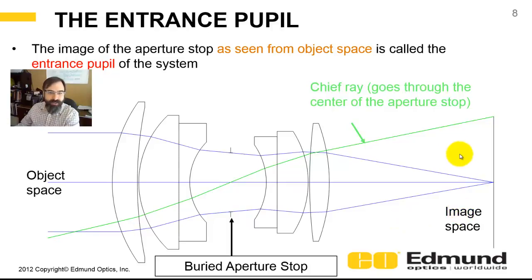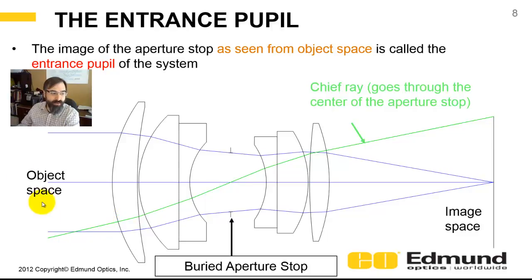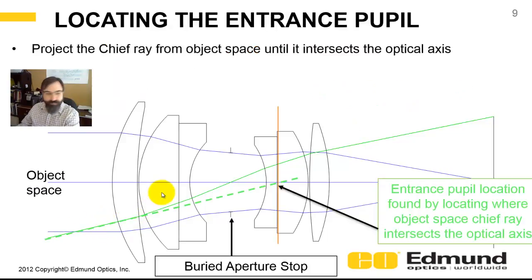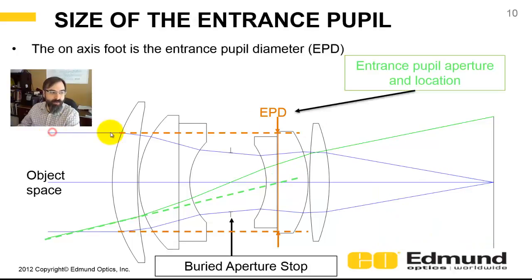Here is object space, here is image space, and I've drawn the chief ray. You can see where the chief ray is zero — by definition it goes through the optical axis where the stop is. To find the entrance pupil, wherever the chief ray crosses the axis is the location of the pupil. If we trace this ray forward — the dashed green line — where it crosses the optical axis, that is where your entrance pupil is located. To get the size of the entrance pupil, you take your marginal rays and trace virtual rays to that location. Since we're collimated, the entrance pupil diameter equals the beam diameter out here.